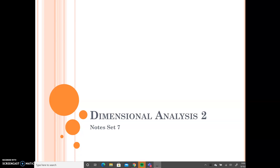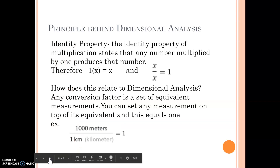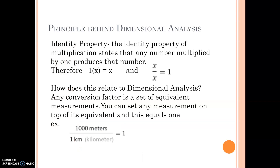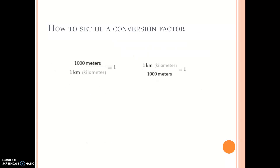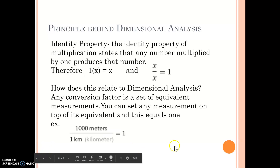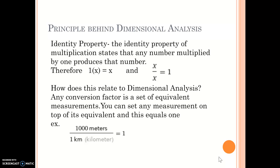Today we're going over dimensional analysis where more than one set of parentheses is required. Before we start, I wanted to go over why we use conversion factors and why they don't change the quantity — they only change the units. The reason for this is the identity property, which states that any number multiplied by 1 produces that same number. So if you rearrange, X over X equals 1, and this is exactly how we situate conversion factors.